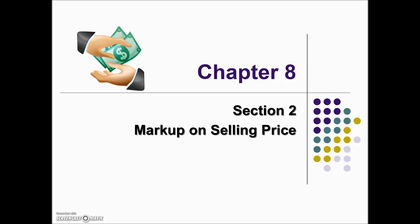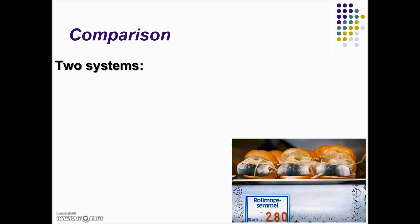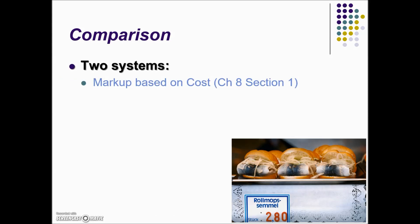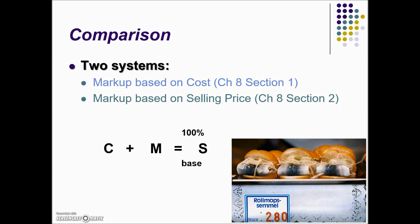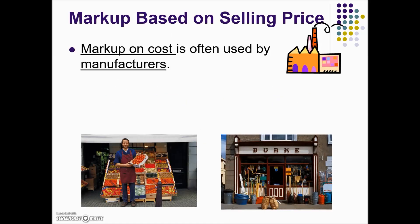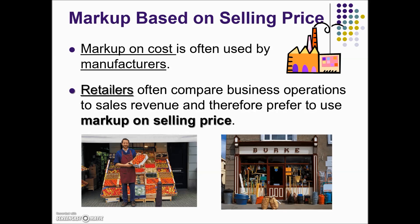In this section we're going to look at calculating markup based on selling price. In the previous section we worked on markup based on cost, and now we're going to look at markup based on selling price. We use the same formula — cost plus markup equals selling price — except now the base moves to the selling price. Markup on cost is often used by manufacturers; however, retailers often compare business operations to sales revenue and therefore prefer to use markup on selling price.